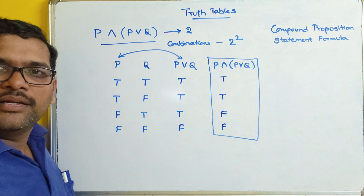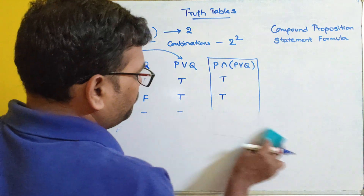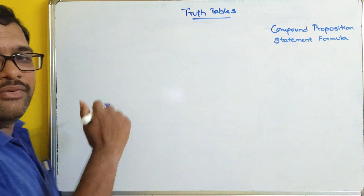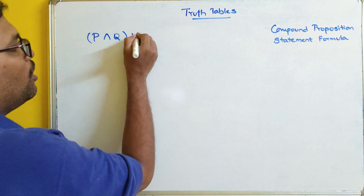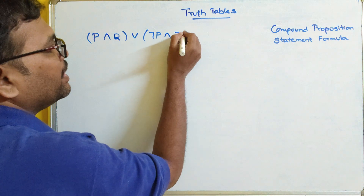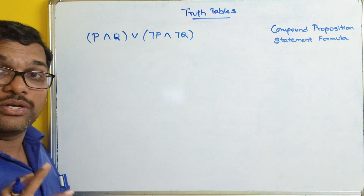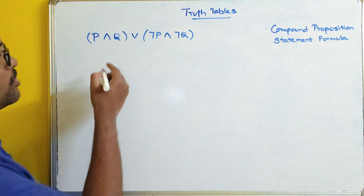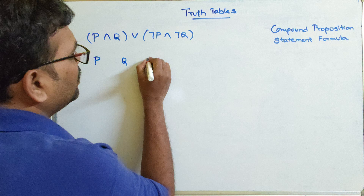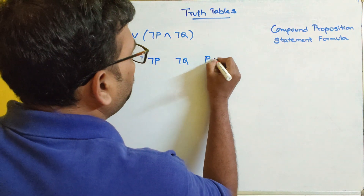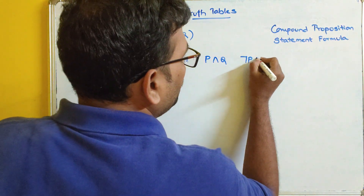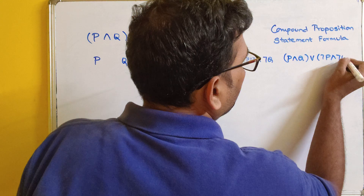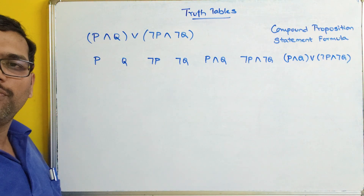Now we'll see one more example. The formula is P ∧ Q ∨ ¬P ∧ ¬Q. We have to find the truth value for this compound proposition. There are two propositions, P and Q, so the combinations will be four. We write columns for P, Q, ¬P, ¬Q, P ∧ Q, ¬P ∧ ¬Q, and finally the full expression.